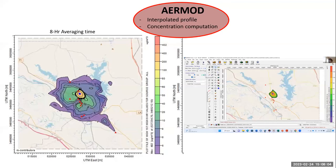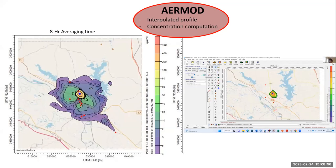All of the output obtained, plus additional defined parameters, were processed in AERMOD to compute PM2.5 concentration and provide an interpolated profile for an eight-hour averaging time. The concentration varies from 4 micrograms per cubic meter up to over 400 micrograms per cubic meter. The dispersion follows the same pattern as the wind direction profile. Our interpretation is that the closer someone is to the facility, the more they are exposed to higher concentrations of PM2.5.